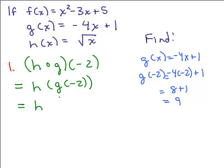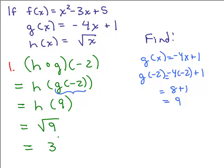So we want h of 9, because g of negative 2 is 9. Now we have to look at what h of 9 is — we go back to the function for h, which is the square root of x. So h of 9 would be the square root of 9, and the square root of 9 is 3. So h of g of negative 2 is 3.